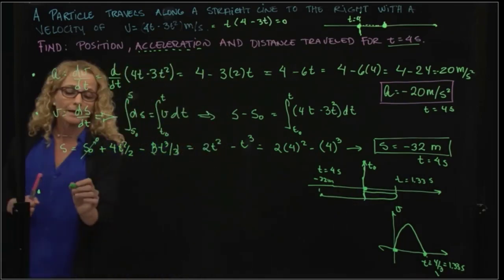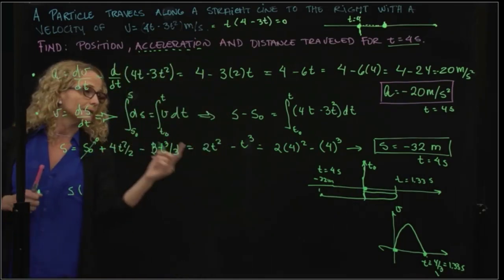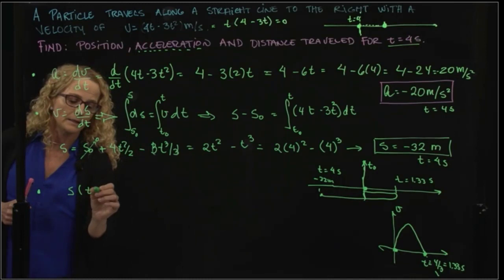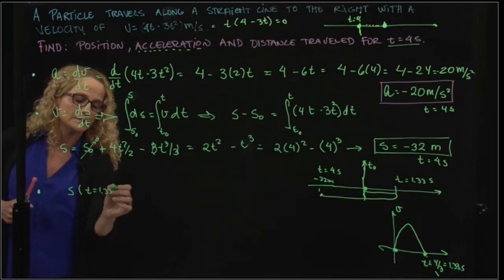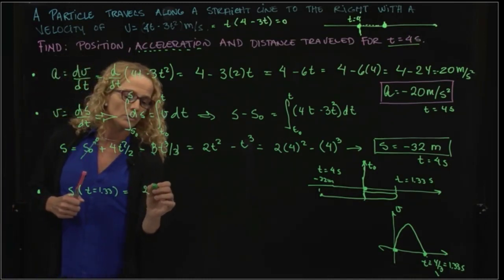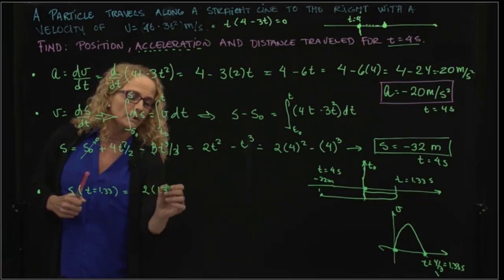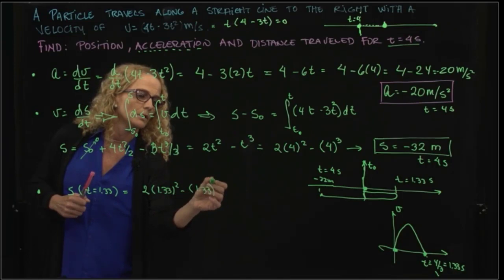So we can evaluate our distance at t = 1.33 seconds, and that gives us 2 times 1.33² - 1.33³.